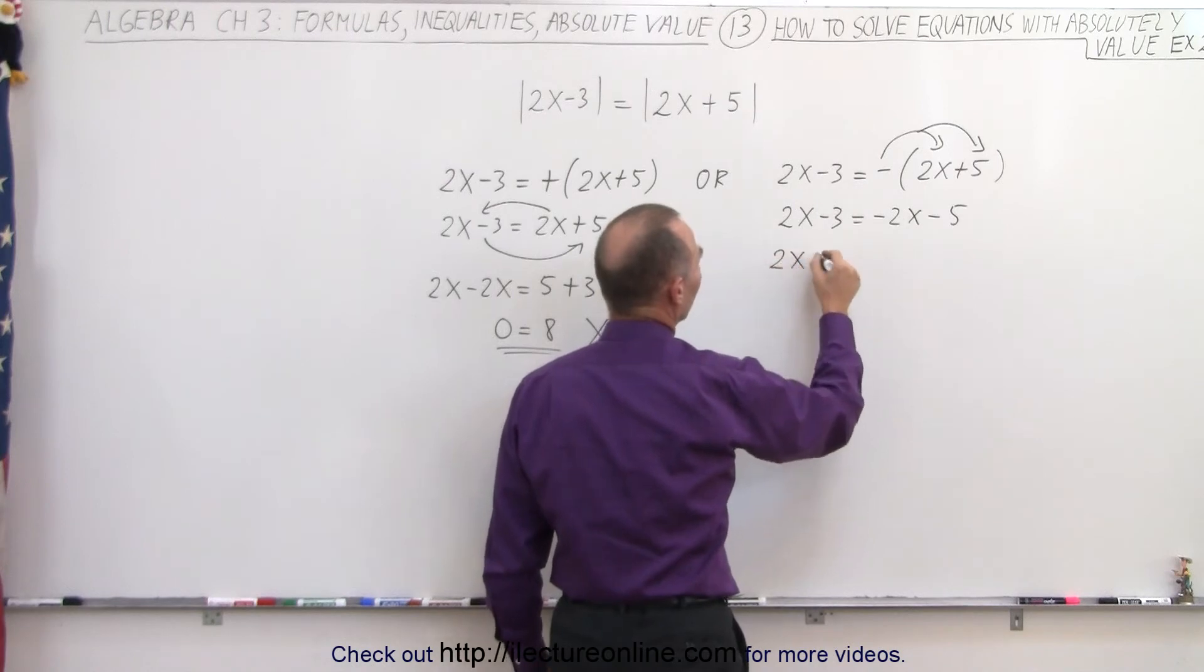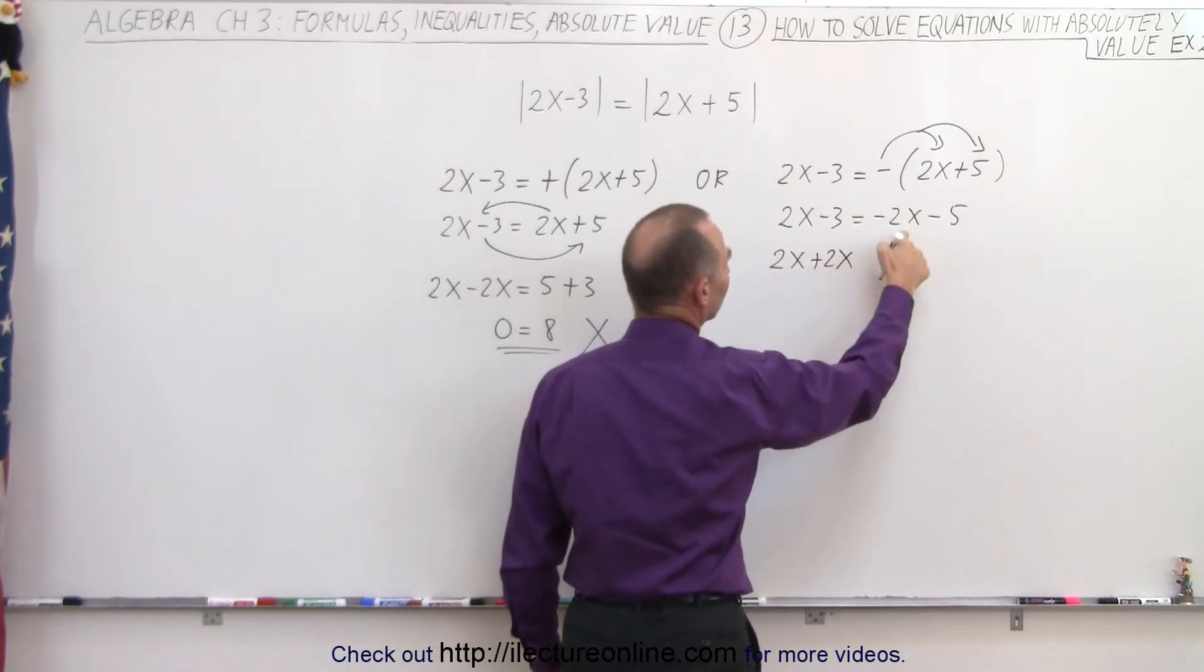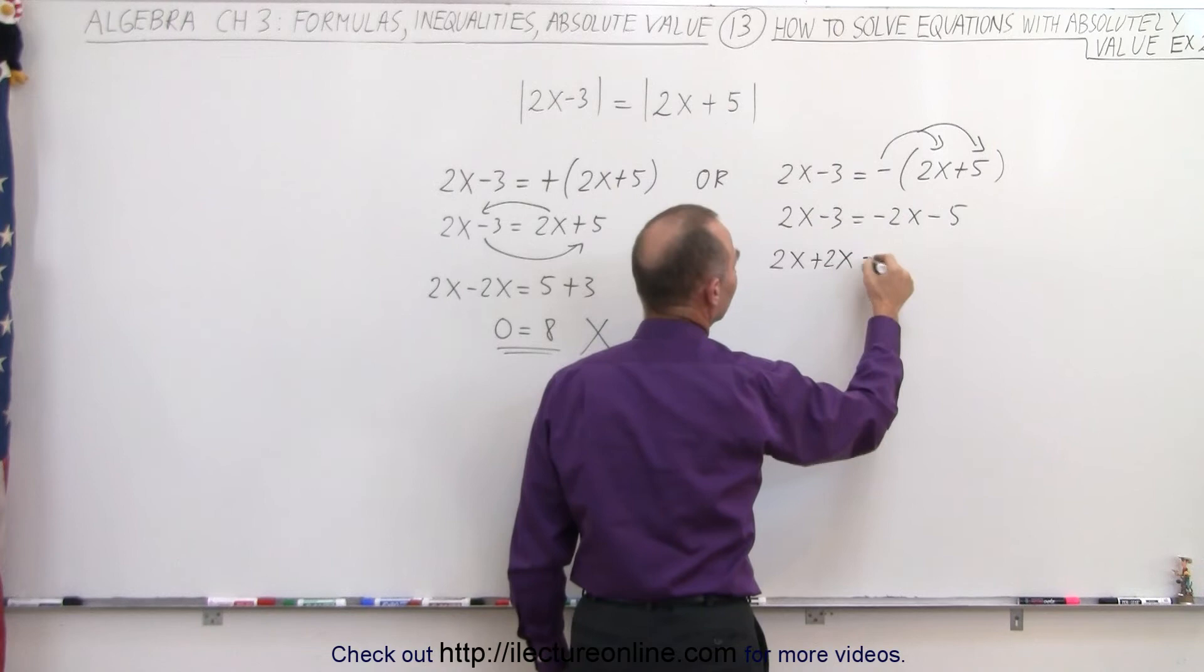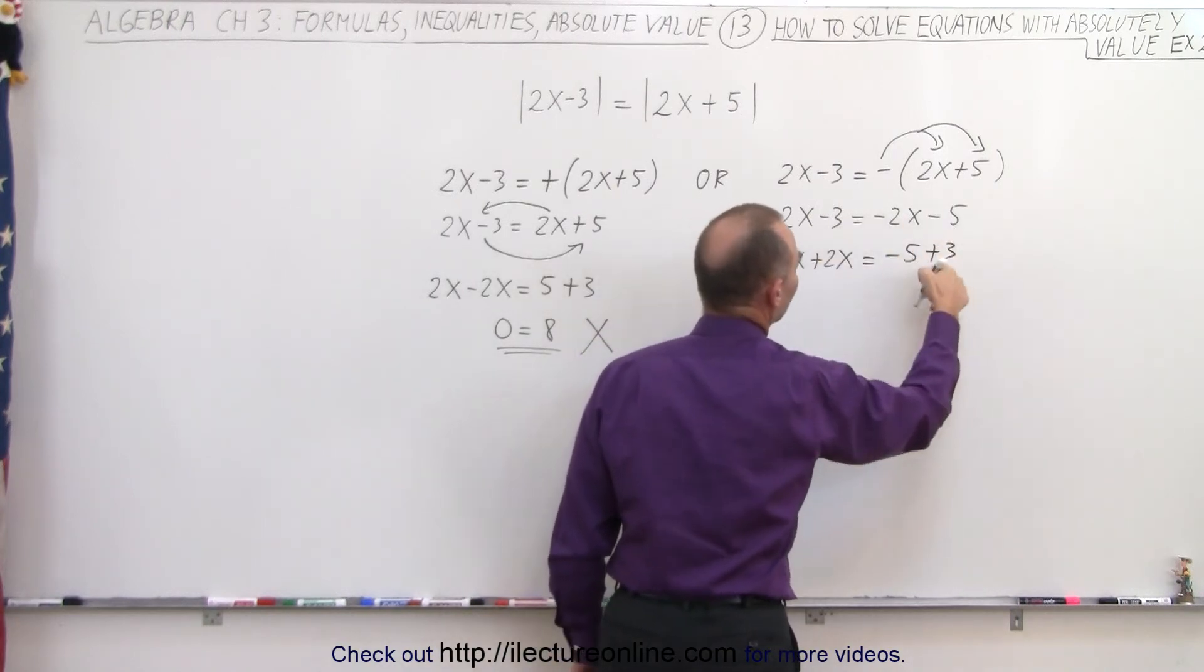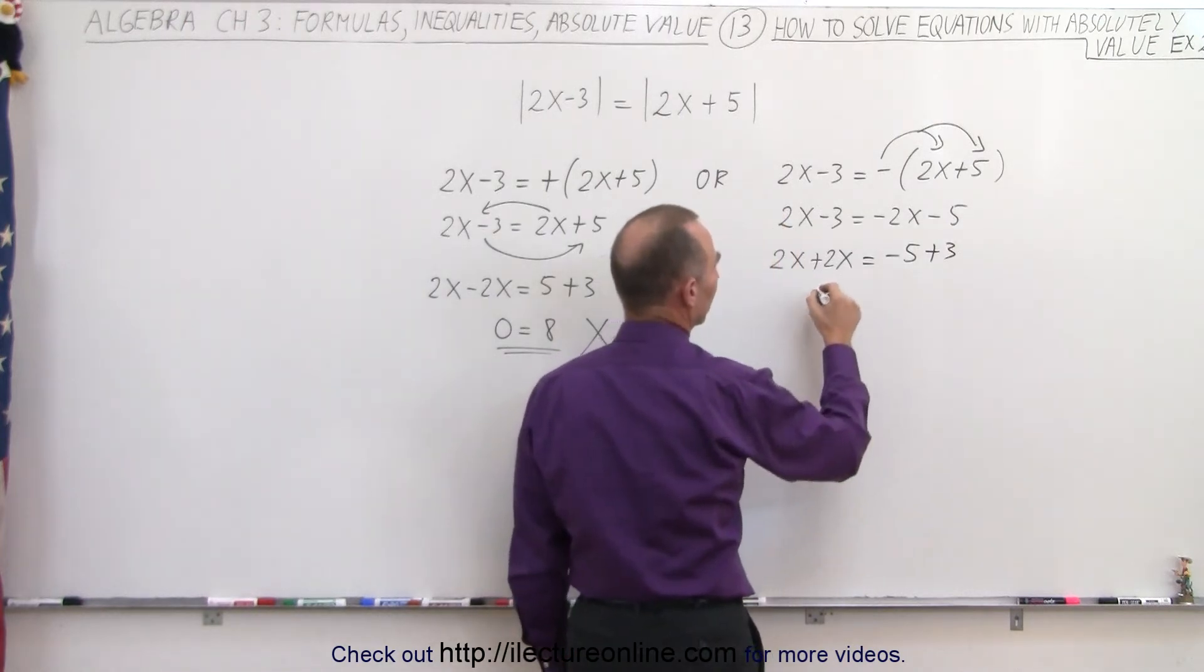So 2x plus 2x, when we move the negative 2x to the left side, we get plus 2x, equals minus 5 plus 3. When we move the negative 3 to the right side, we get plus 3.